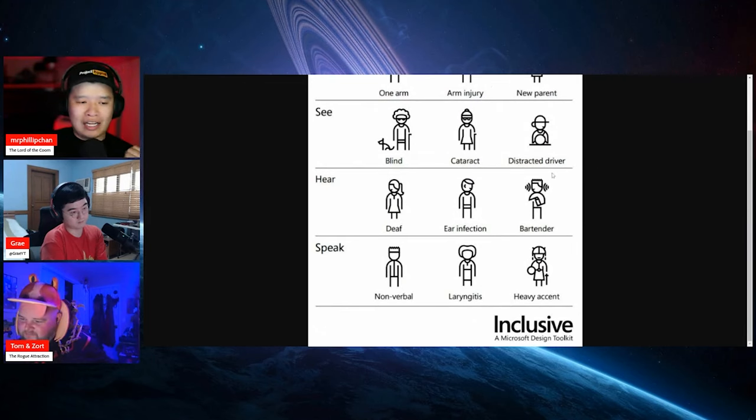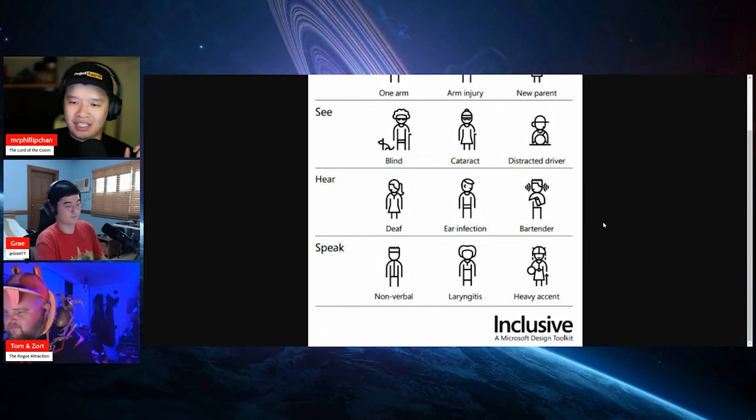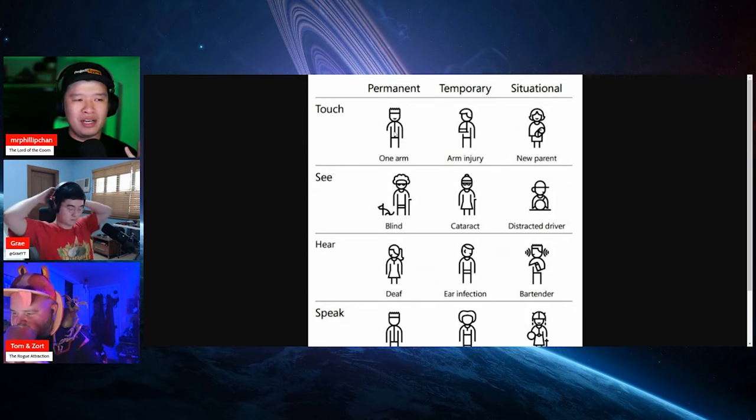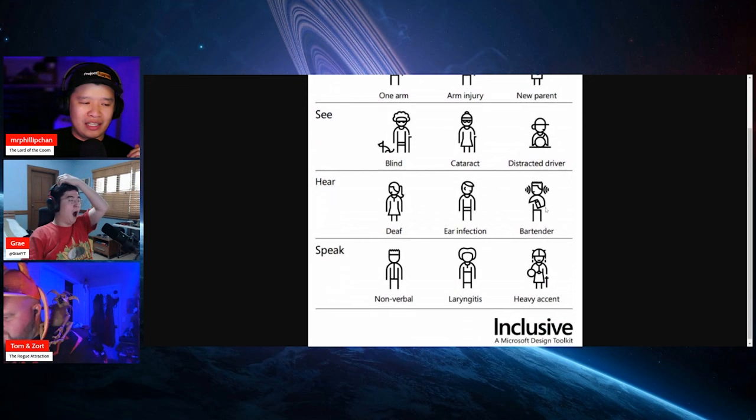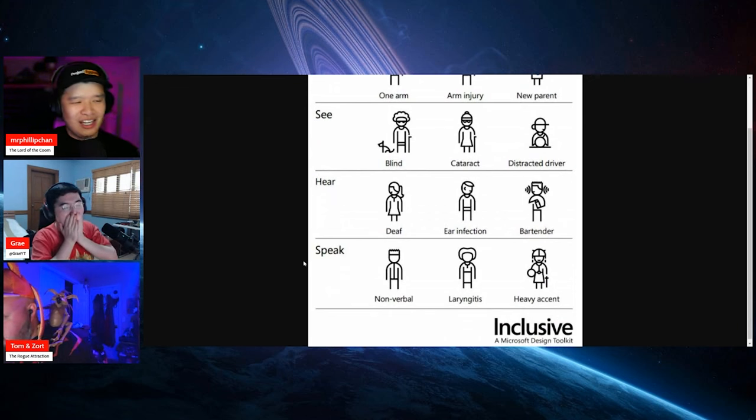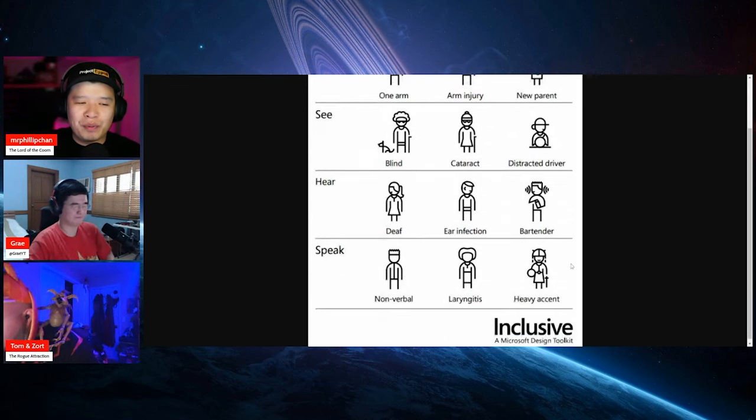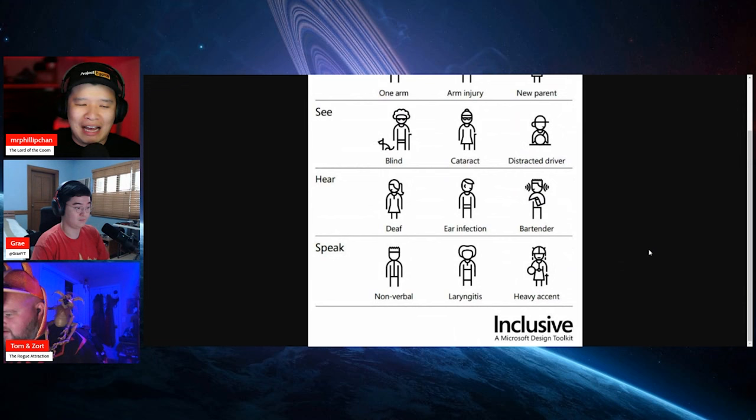So right over here, this is the actual chart from Microsoft Design Toolkit. This is their inclusivity toolkit right over here. You got permanent, temporary, and situational. If you're blind, cataracts, distracted, a driver, and stuff like that. This one is stupid right over here. Situation of disability to have heavy accent.